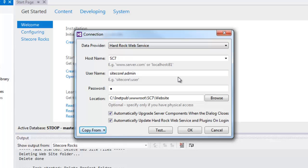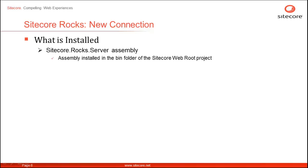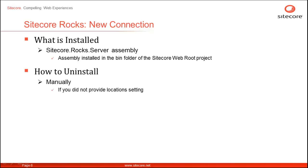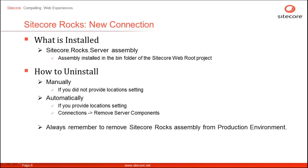Now let's explore what has been installed on our system. Once connected, let's explore the components installed by Sitecore Rocks. Sitecore Rocks installs Sitecore.rocks.server assembly in the bin folder of the Sitecore instance. Depending on the installation, if we are using other Sitecore Rocks extensions, we may have other DLLs as well — for example, Sitecore.rocks.server.speak. To uninstall, we may manually remove the DLLs from the bin folder, or use the Sitecore Rocks context menu under connections and choose to remove server components.